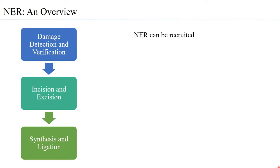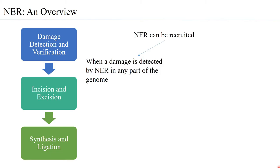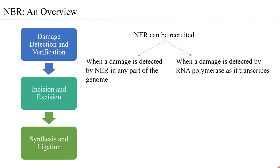Interestingly, NER is recruited by any damage happening across the entire genome — it is able to detect damages present in the entire genome. What is also observed is that NER can be recruited when a damage is detected by RNA polymerase during transcription. Essentially, it is a damage in the DNA that is removed, whether detected genome-wide or during transcription.